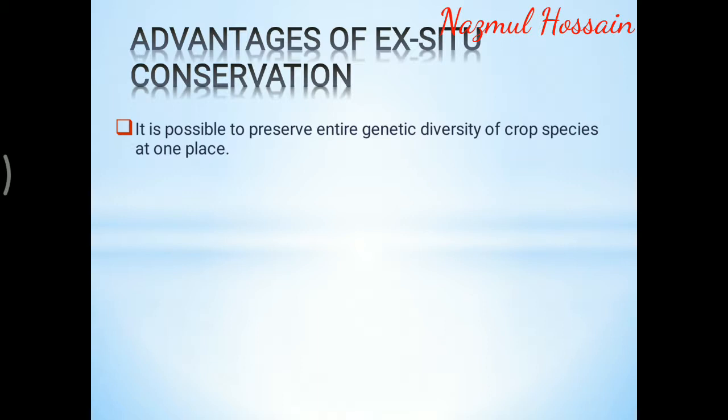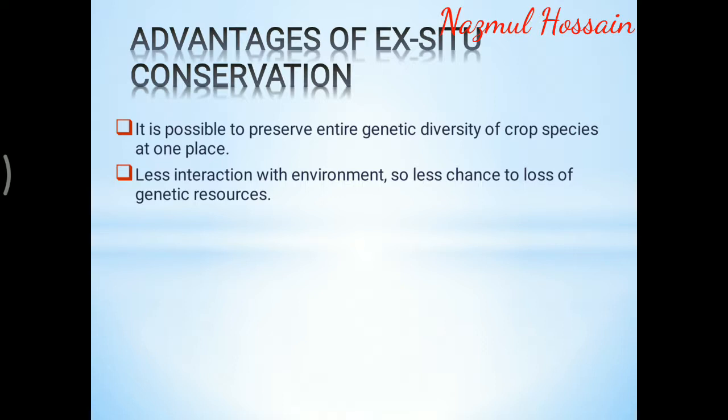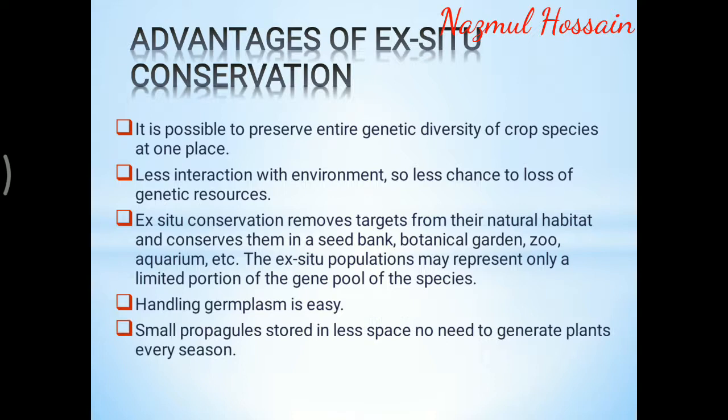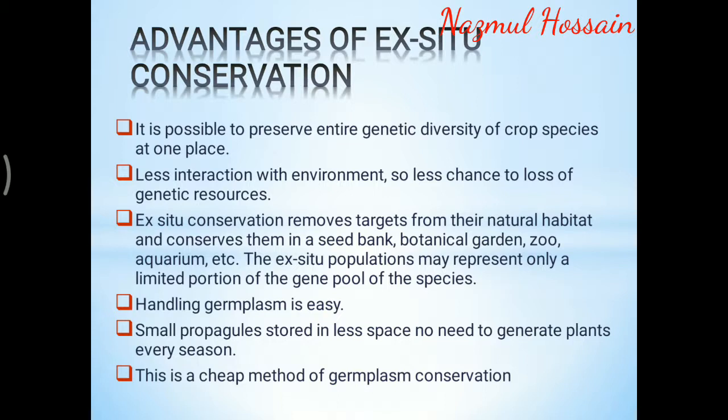Advantages of ex-situ conservation: it is possible to preserve the entire genetic diversity of a crop species at one place. There is less interaction with the environment, so less chance of losing genetic resources. Ex-situ conservation removes targets from their natural habitats and conserves them in seed banks, botanical gardens, zoos, aquariums, etc. Handling germplasm is easy; small propagules are stored in less space. No need to regenerate plants every season. This is a cheap method of germplasm conservation.